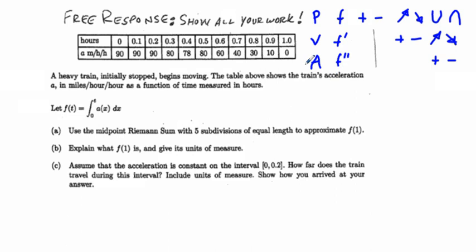And so when we integrate, we're going to be going up from this line here, the acceleration to velocity. And so what we have is when we use a Riemann sum to approximate f of one, we're going to go from acceleration to velocity.